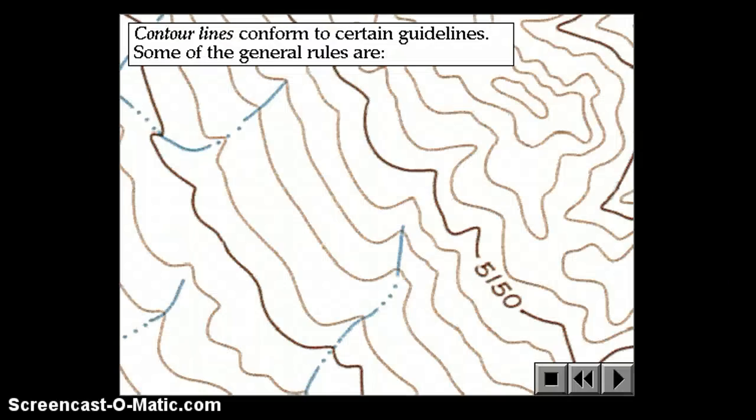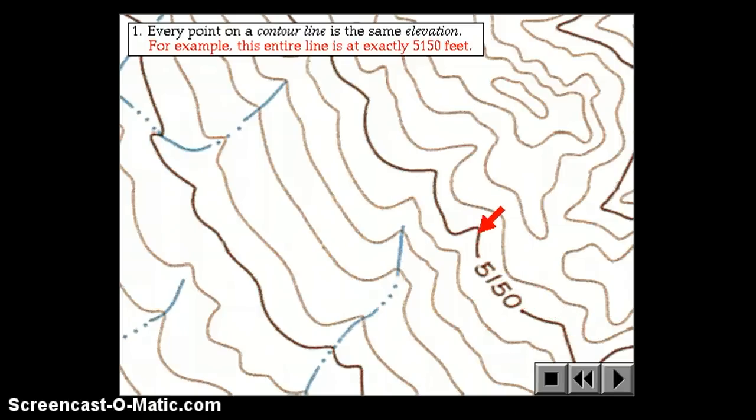Contour lines conform to certain guidelines. There are some general rules that contour lines must follow. Rule number one, every point on a contour line is exactly the same elevation. So, along a 5150 contour line, every point is 5150 above mean sea level, feet above the sea level. If you were to follow the path of that red arrow, if you walked along that line, you would never take a step uphill or downhill. You would always be at exactly the same elevation.